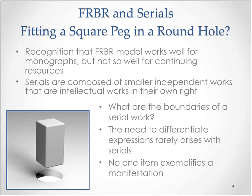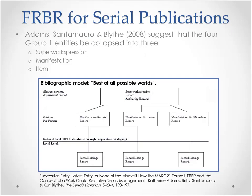Another area in which serials do not fit well within the FRBR model is at the item level. Since serials are ongoing, there is no one item that exemplifies a manifestation. So serials are somewhat at odds with almost every level of the FRBR hierarchy. Despite these difficulties, some researchers have analyzed FRBR in relation to serials and proposed revisions to the model to better accommodate serial publications.